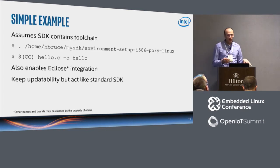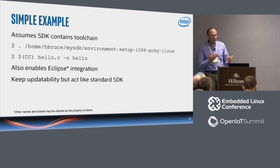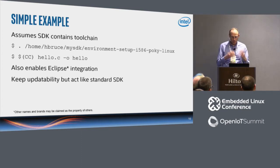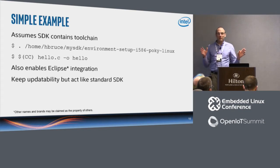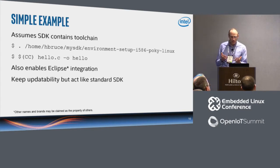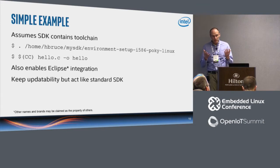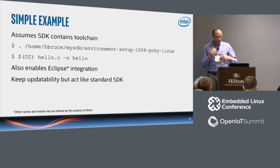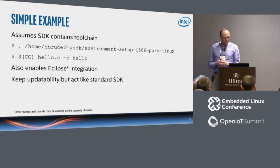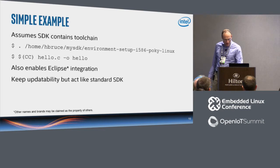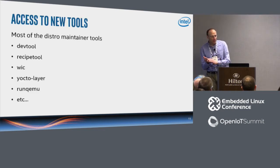In a very simple example, assuming the eSDK installer contains a toolchain, you run the environment script and then do a very simple compilation, run a hello program, and push it to the target. No change here really over the standard SDK — just showing that the Extensible SDK, although we've added features, is backward compatible with the standard SDK. It allows Eclipse integration as before, but it's also updatable, unlike the standard SDK.